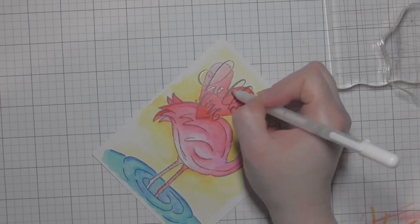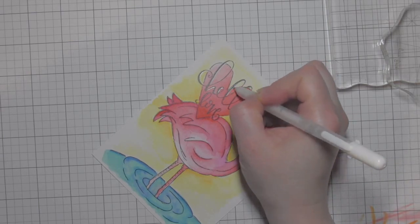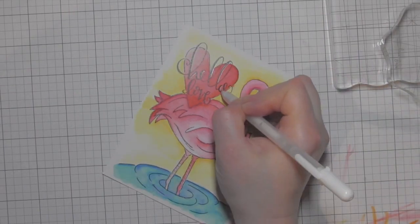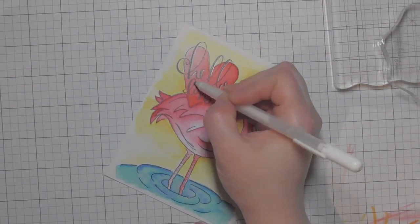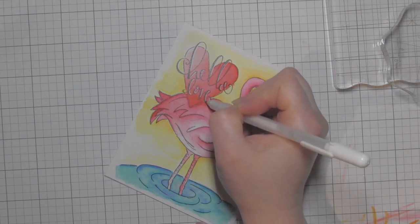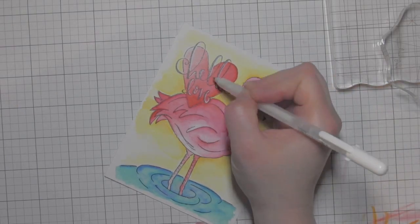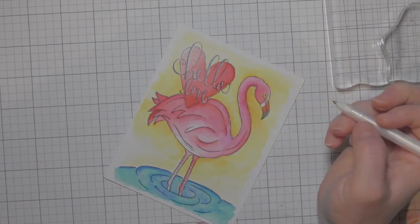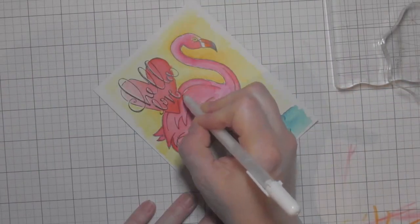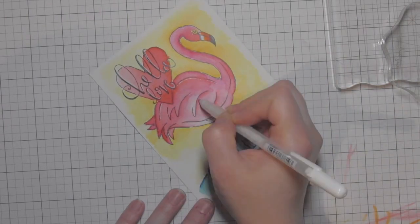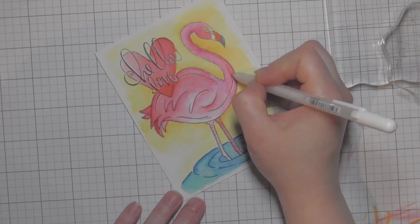Then I took a white glaze pen and I'm adding highlights to the hello love. Once I did that, I decided to add highlights to even more areas in this design. Adding little touches to the flamingo itself and to the water that the bird is standing in. It's just going to add some nice detail and interest to the design.